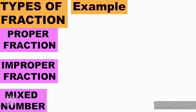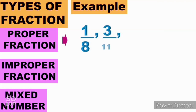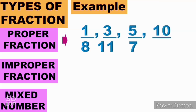Examples of proper fractions: we have 1 over 8, 3 over 11, 5 over 7, and 10 over 13. As you can observe, the denominator is bigger or higher than the numerator.